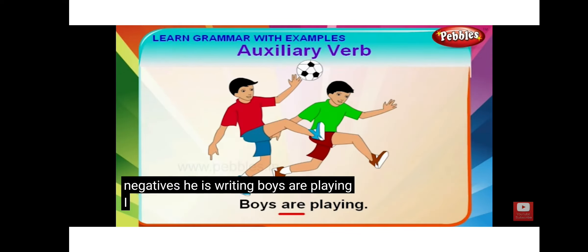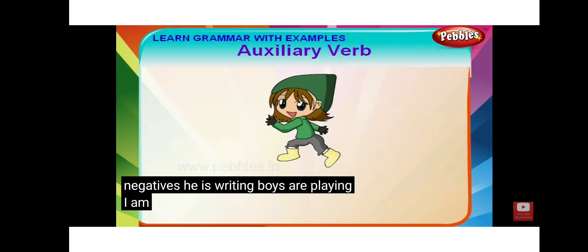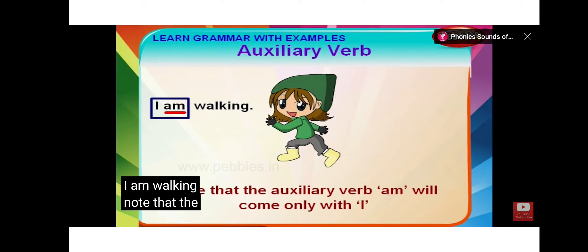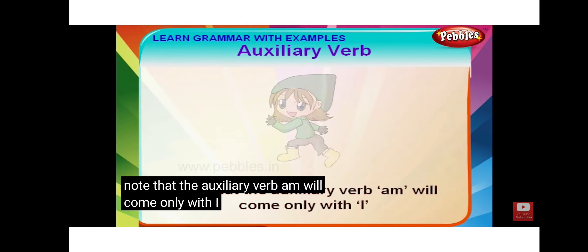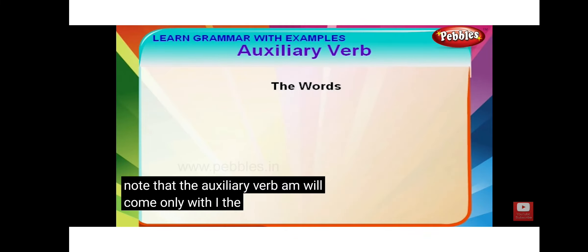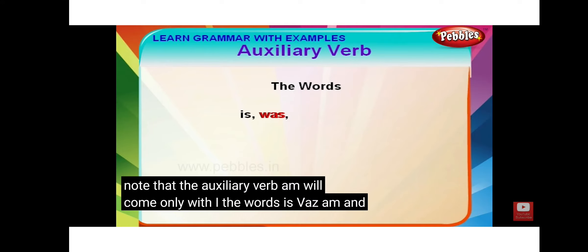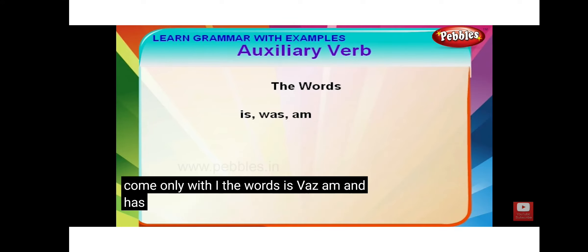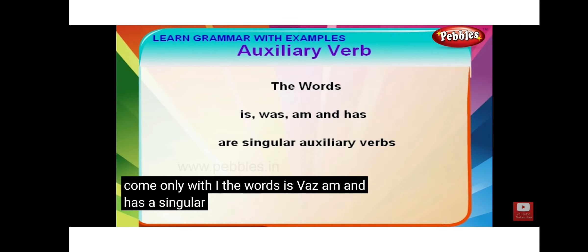Boys are playing. I am walking. Note that the auxiliary verb 'am' will come only with 'I'. The words is, was, am, and has are singular auxiliary verbs.